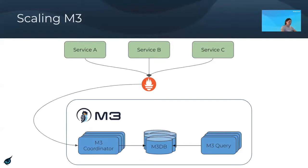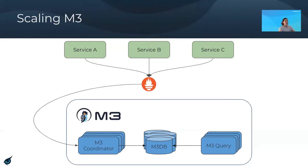Scaling up M3: all metrics are scraped by a Prometheus instance, which forwards metrics to M3 via Prometheus remote write. Scaling up the various tiers is a matter of putting a load balancer in front of them and adding additional instances. For the coordinator and query tier, because they are stateless, it's straightforward — just add additional instances. However, for the M3DB tier, it is a stateful tier and is designed to be aware of when you are adding or removing instances, so you need to ensure configuration changes are made accordingly.